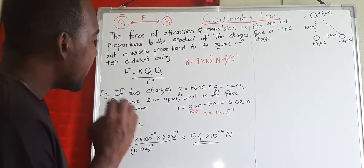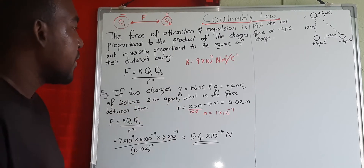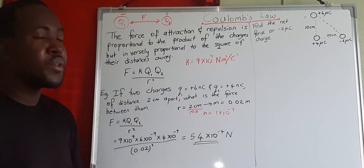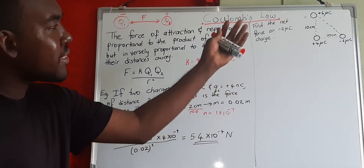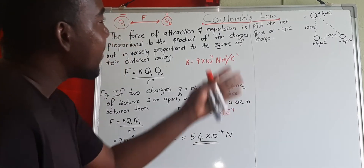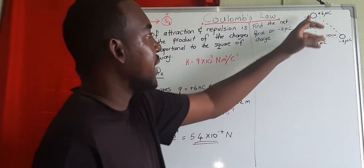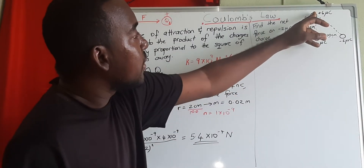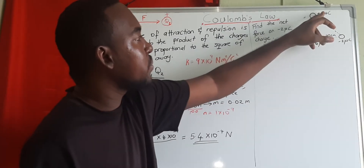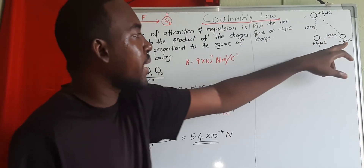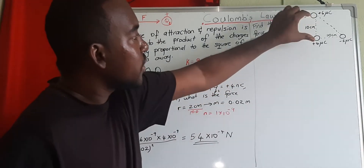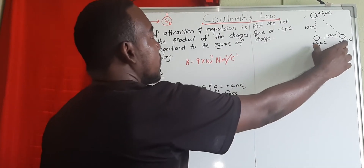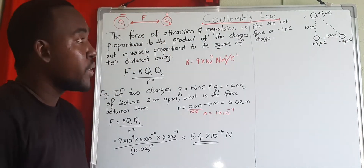This is a very small force because the charge values are not large. Now let's look at something more complicated: three charges arranged in a right-angle triangle. We have a positive 6 microcoulombs, a positive 4 microcoulombs, and a negative 2 microcoulombs. The distance between the positive 4 and positive 6 is 10 centimeters, and the distance between positive 4 and negative 2 is also 10 centimeters.